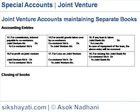If the co-venturers account shows a debit balance, he will bring the money into the venture and the entry will be reversed. Closing of books: If there are any balances in loan, supplier, or debtor accounts in joint venture, they will be closed first and the balance will be transferred to Joint Venture Account. The Joint Venture Account is closed first, then co-venturers accounts and joint bank account are closed simultaneously.